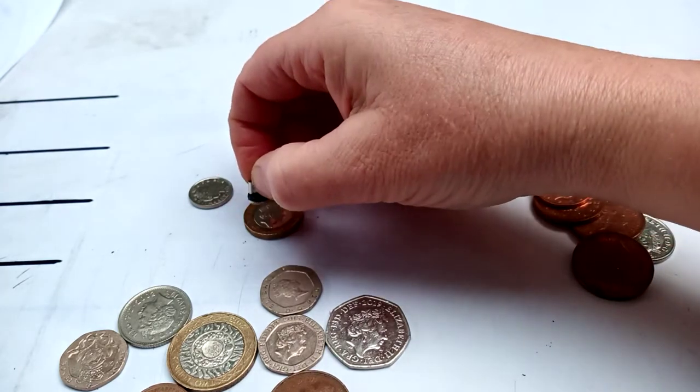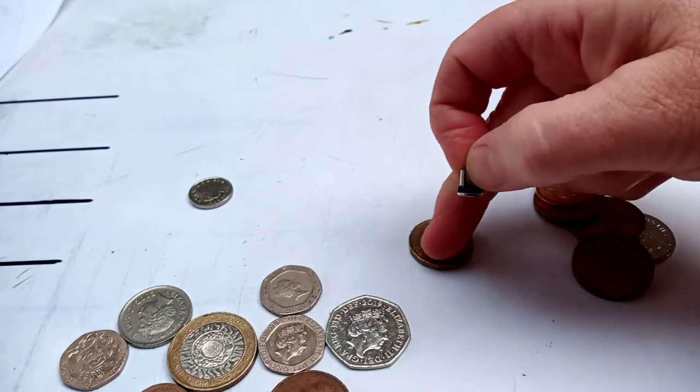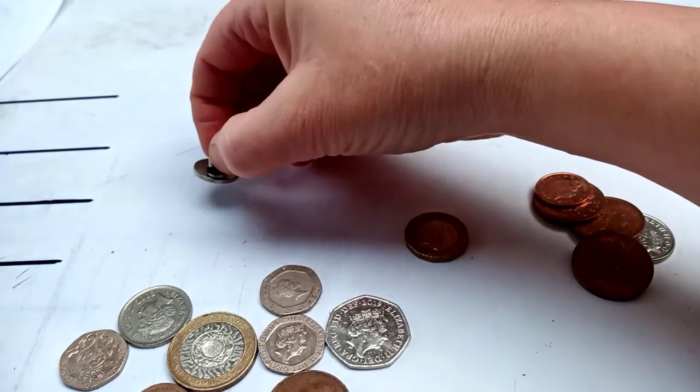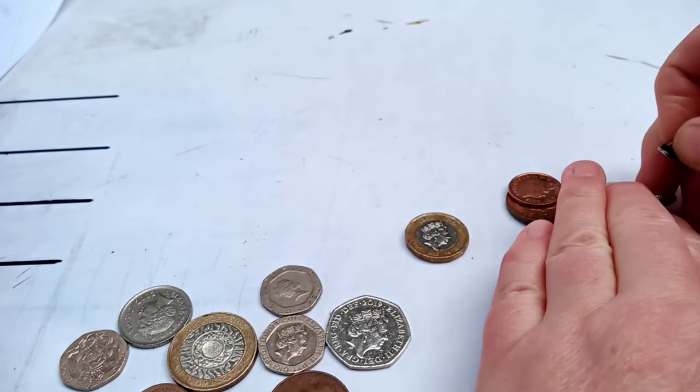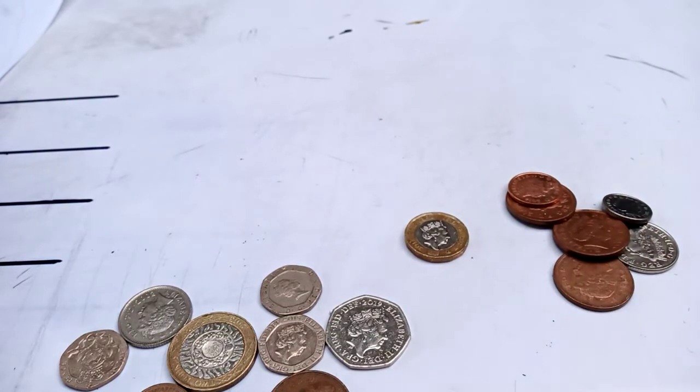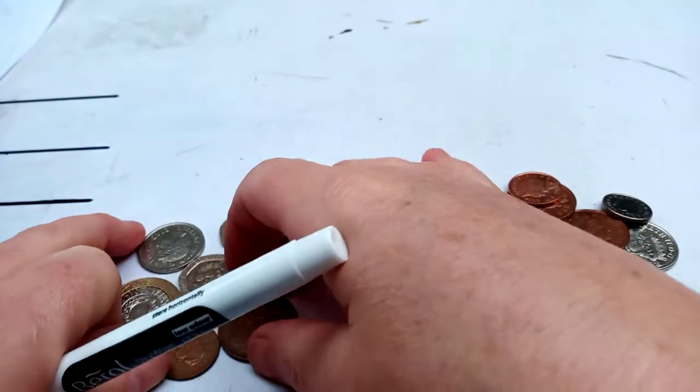Sort of magnetic, he goes in the middle doesn't he, and then last but not least. So sort out your coins into magnetic, not magnetic, and sort of magnetic. Okay, you've got your three groups.